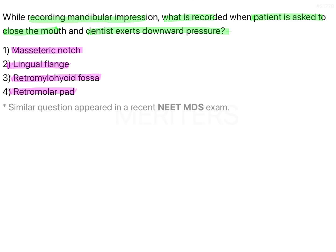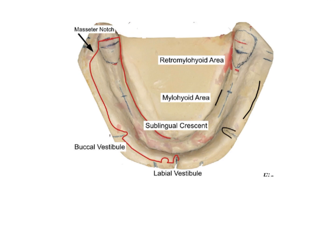Let's visualize where all of these structures are present. The masseteric notch is present on the distobuccal side. The lingual flange is here — the lingual sulcus is divided into anterior, middle, and posterior. Then we have the retromylohyoid fossa, which is just this corner area, and lastly the retromolar pad. So these are the structures in question.